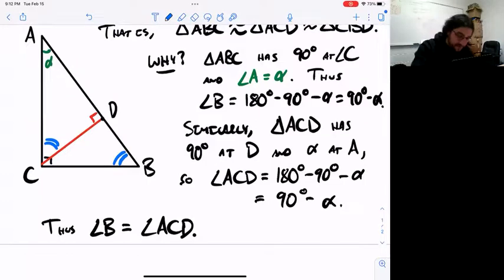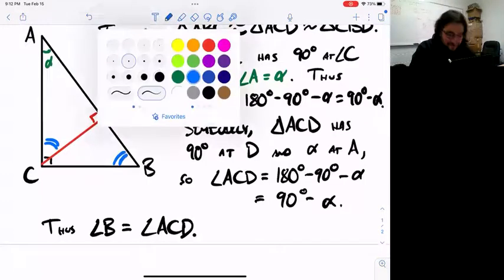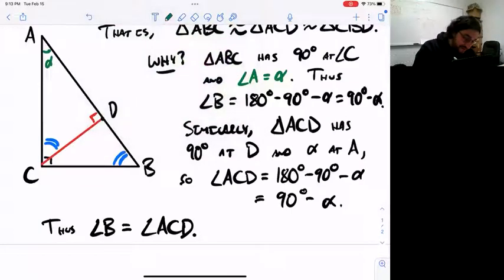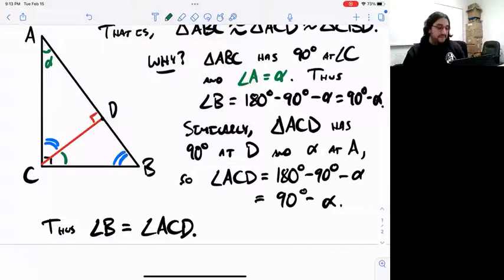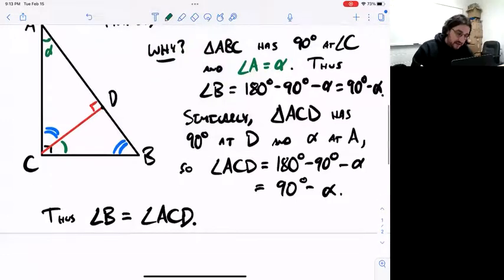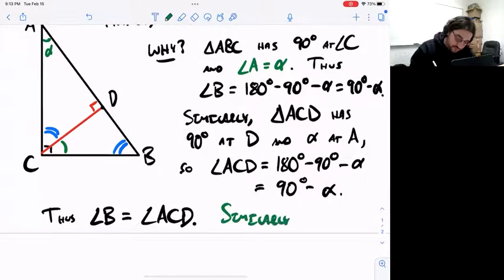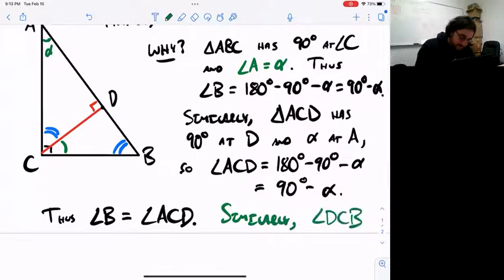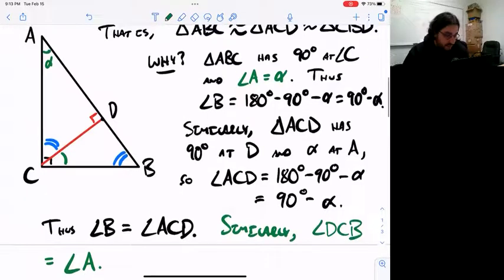Now, a very similar argument produces also that angle DCB has the same measure as angle A.